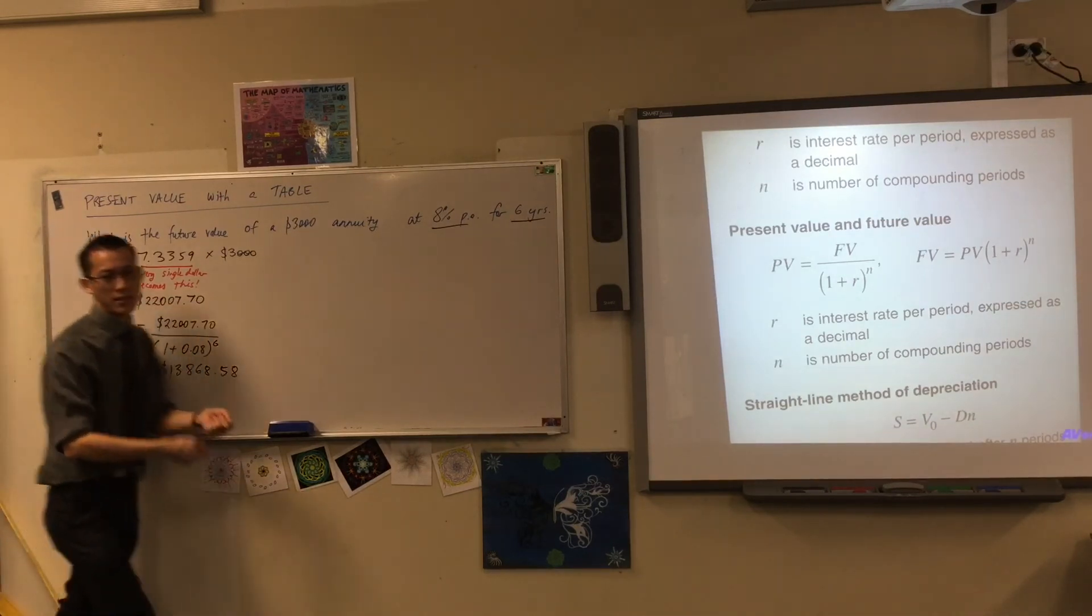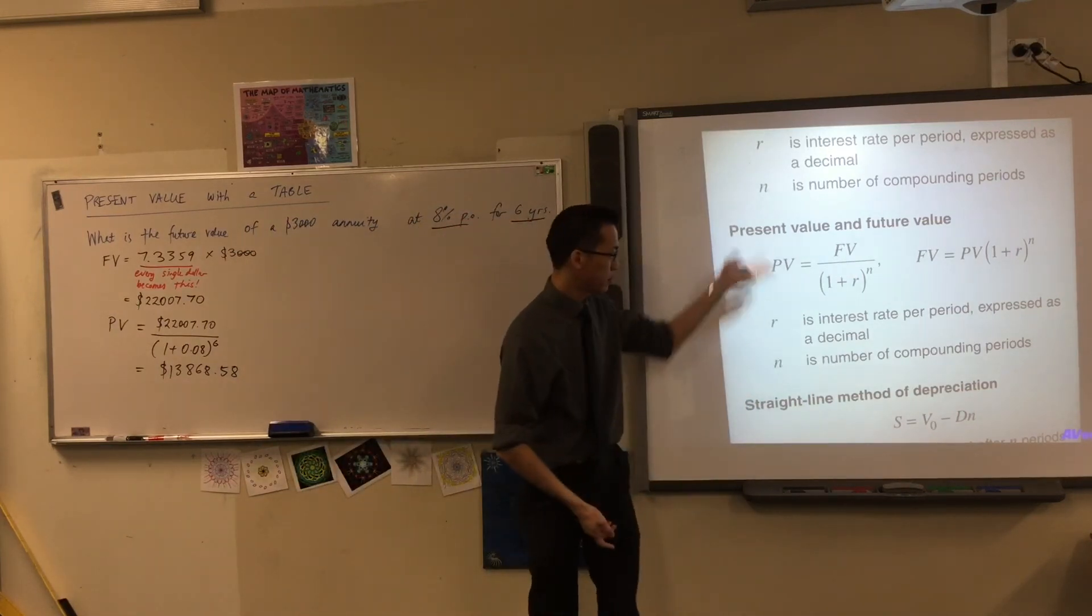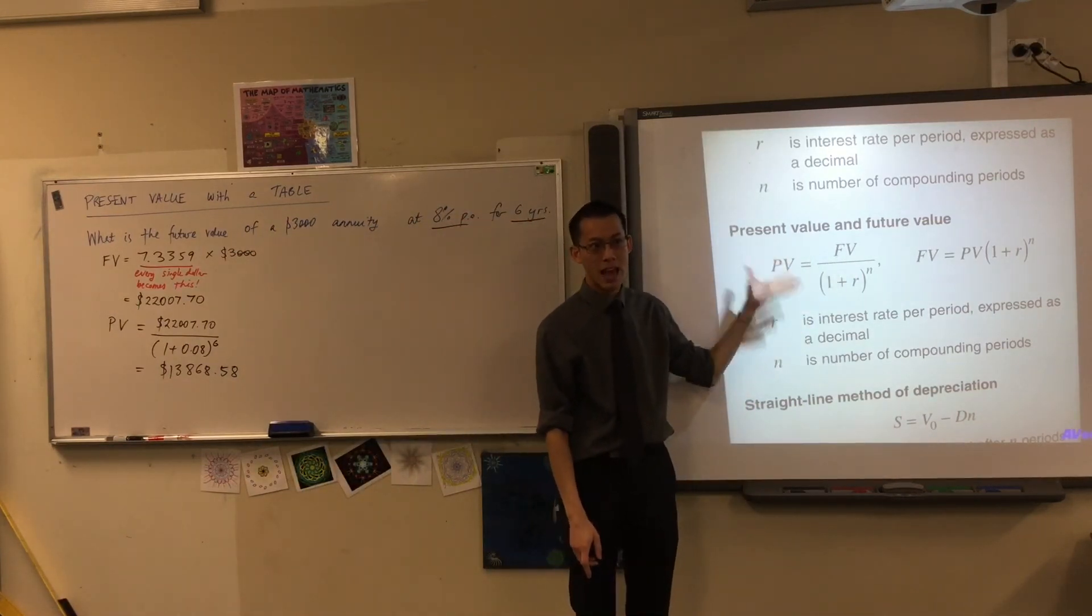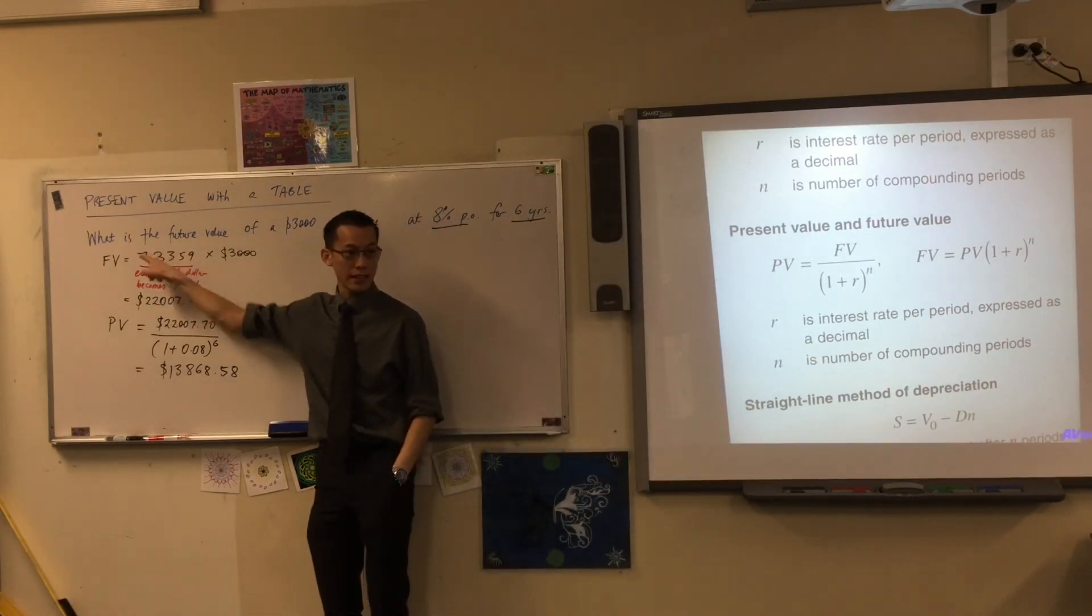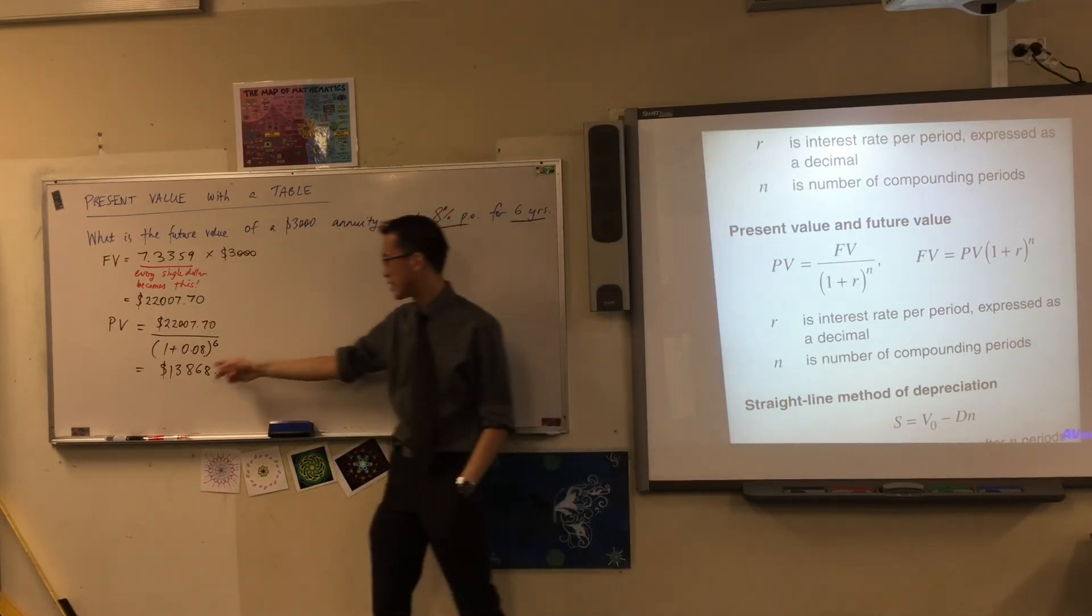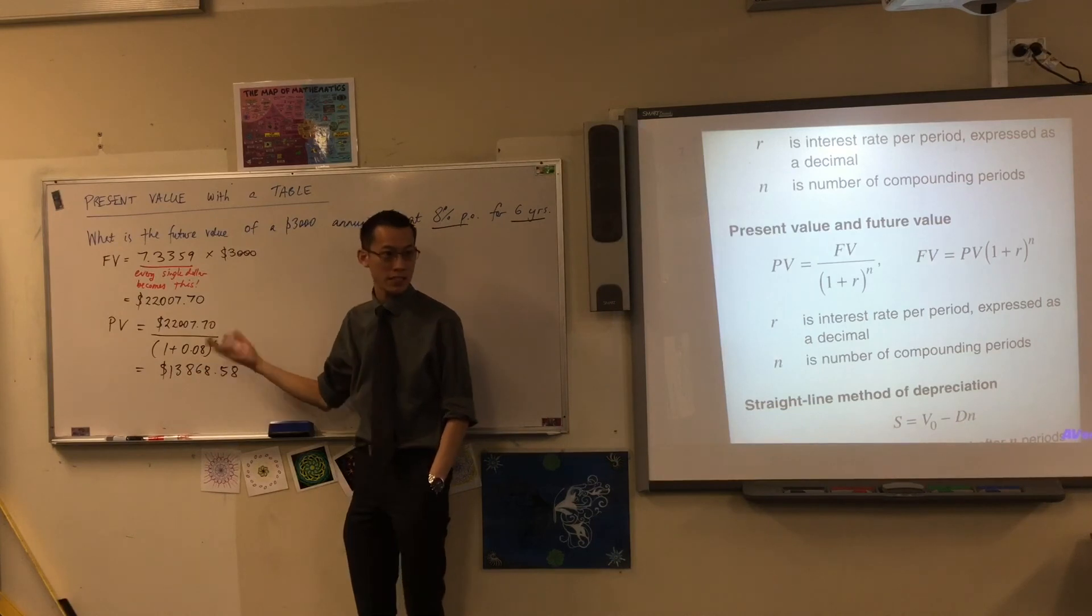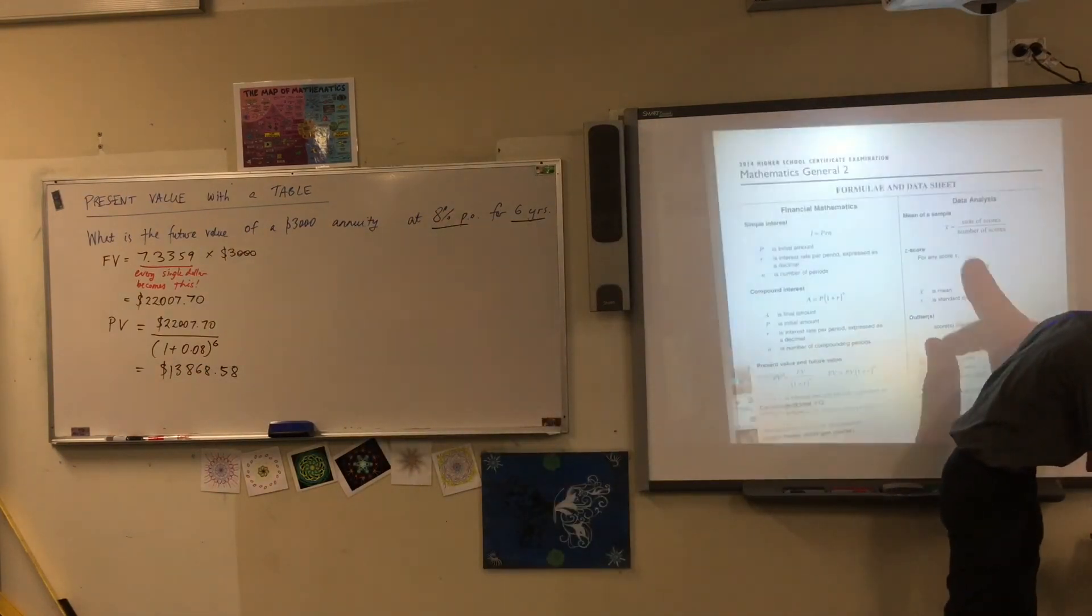Now we've looked at this and it's not too hard to use this. However, just like you did up here and used the table to get this 7.3359 number, what I want you to understand today is that you can use a table to get this $13,868 number. So now page 271, which is what I'll ask you to have a look at.